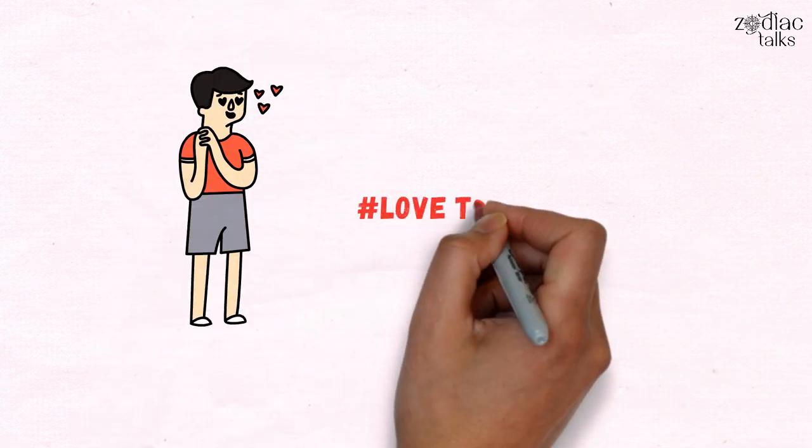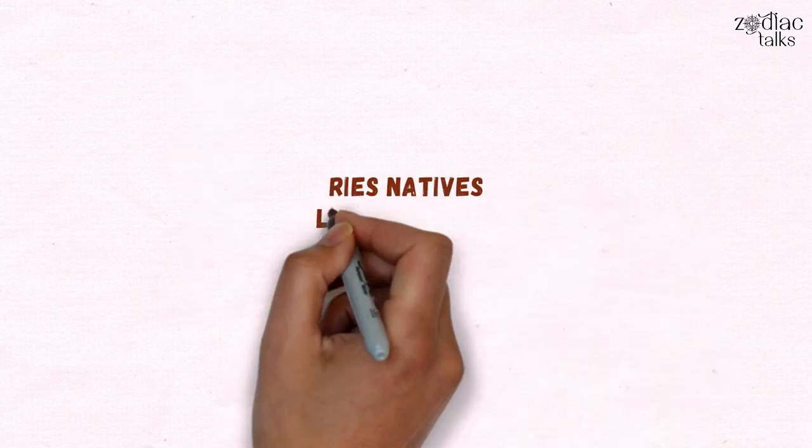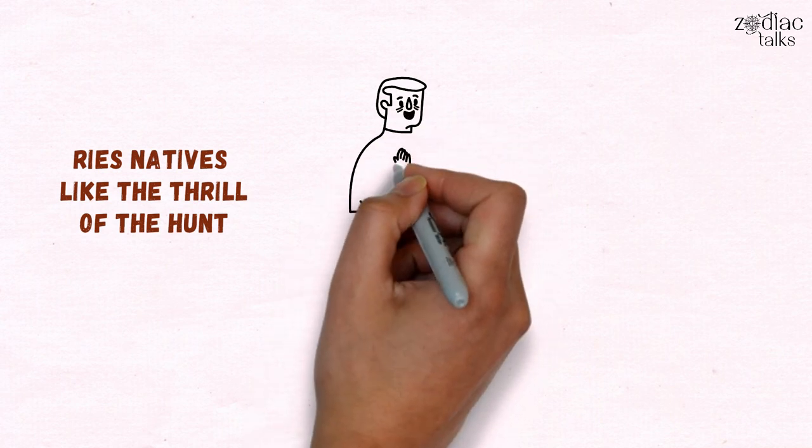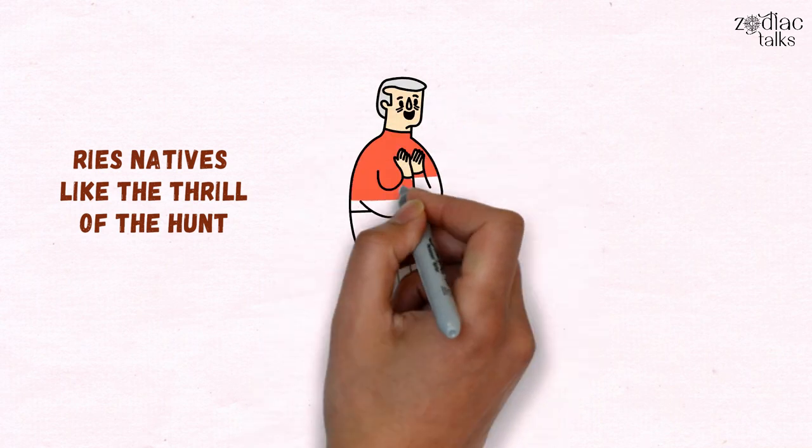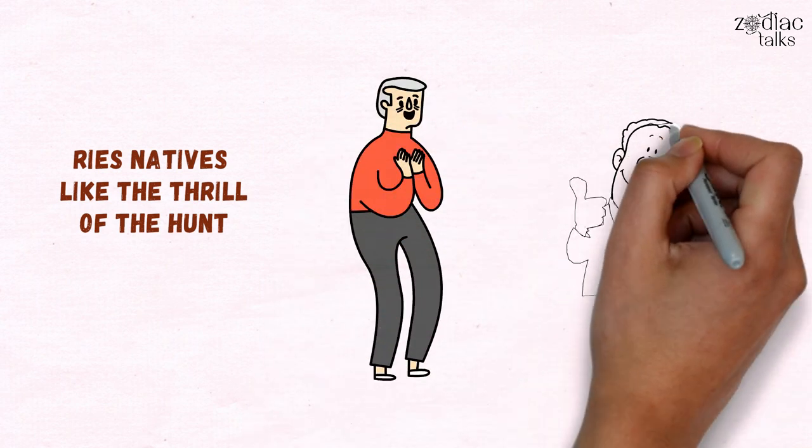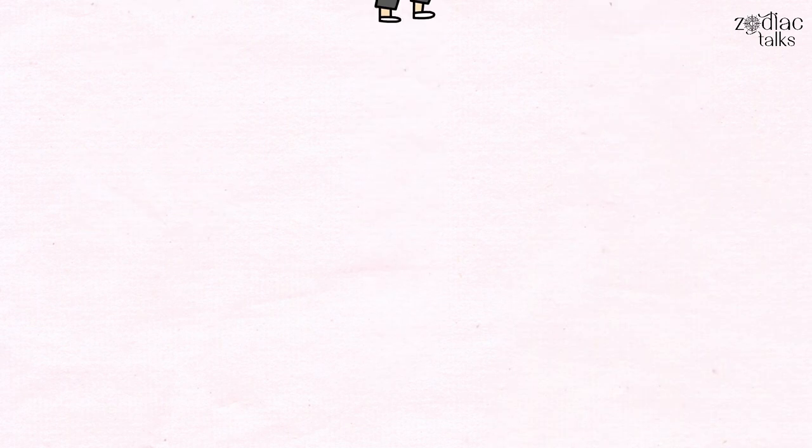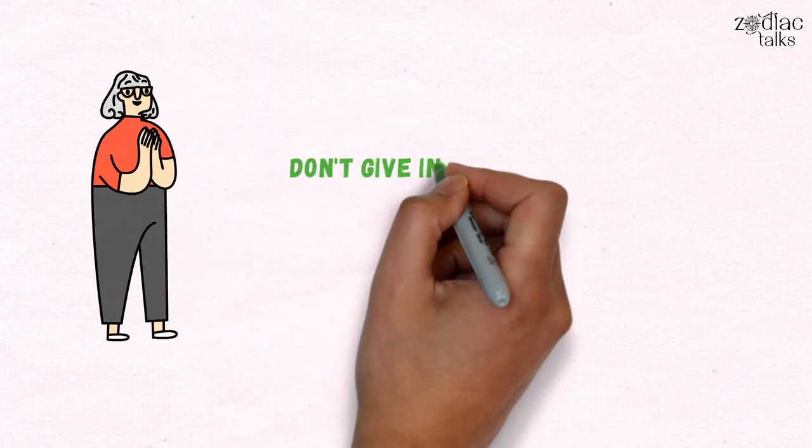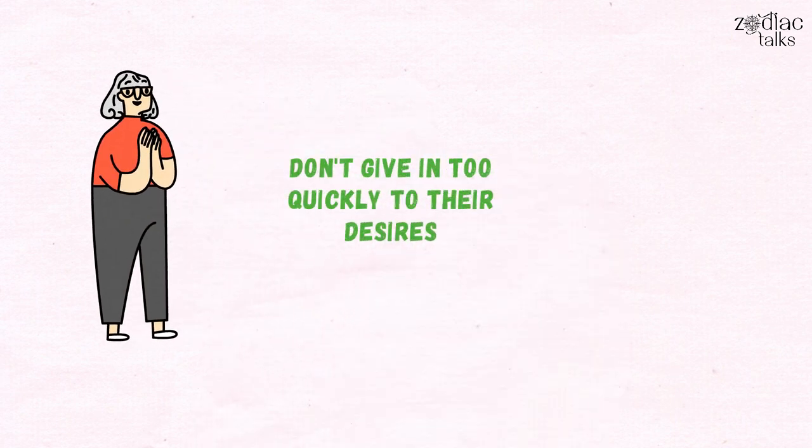Number 4. Loves the chase. Aries natives like the thrill of the hunt. Something about not being completely in control of their prey ignites their desire and makes their sexual encounters more satisfying. If you want to keep Aries interested, keep a mysterious aura and don't give in too quickly to their desires.